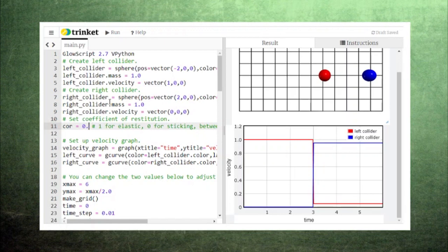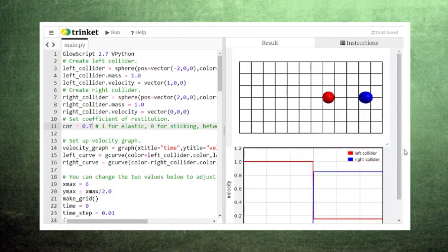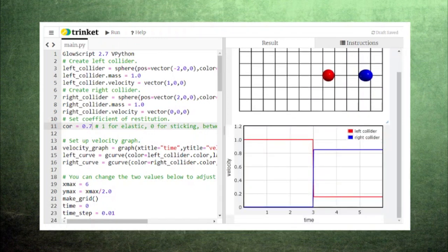If we decrease the coefficient of restitution to 0.7, we can see that the left collider keeps even more of its original momentum and so it continues to move forward at a little faster velocity. Again, the total momentum is the same during phase 1 and phase 3 of the collision, but there is a greater loss of kinetic energy.